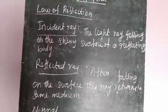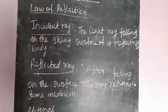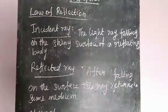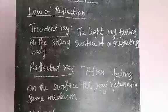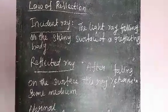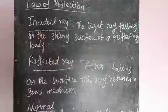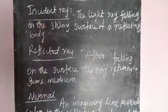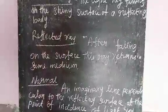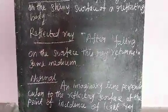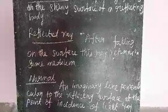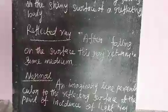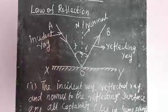Law of Reflection. Incident ray: the light ray falling on the shiny surface of a reflecting body is called the incident ray. Reflected ray: after falling on the reflecting surface, the ray that returns back in the same medium is called the reflected ray. Normal line: an imaginary line perpendicular to the reflecting surface at the point of incidence of the light ray is called the normal line.